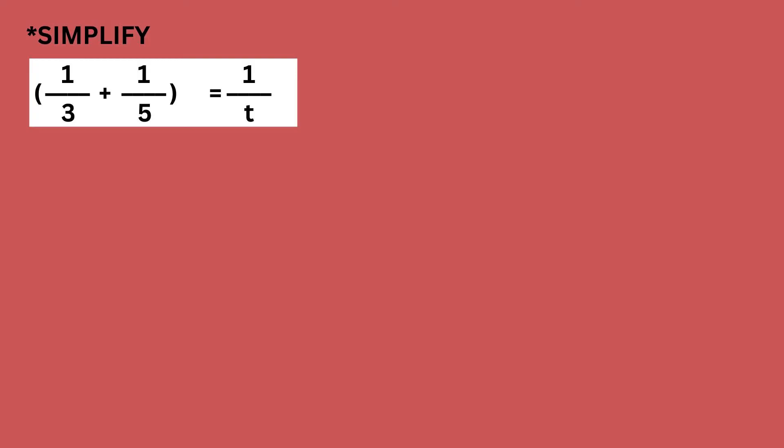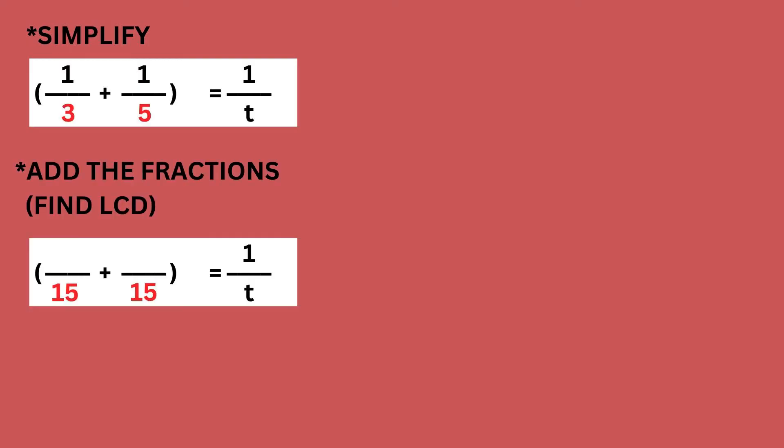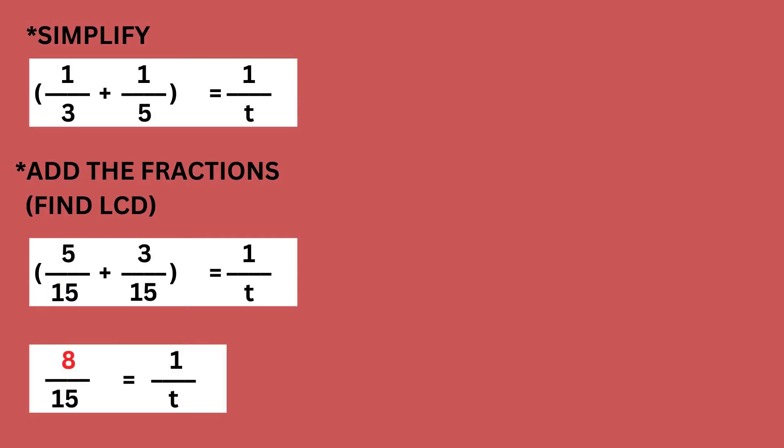Time to simplify by adding the fractions. To add fractions, don't forget to find their LCD, or least common denominator. The lowest common multiple of three and five is 15. For the first fraction: 15 divided by 3 times 1 equals 5, hence 5 over 15. For the second fraction: 15 divided by 5 times 1 equals 3, hence 3 over 15. Now we can add the fractions: 5 plus 3 is 8, hence 8 over 15.